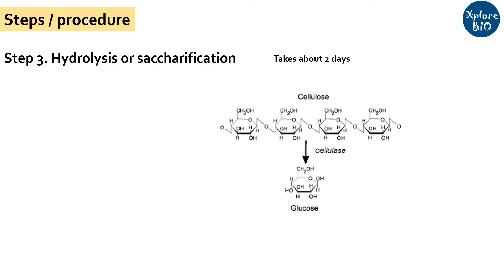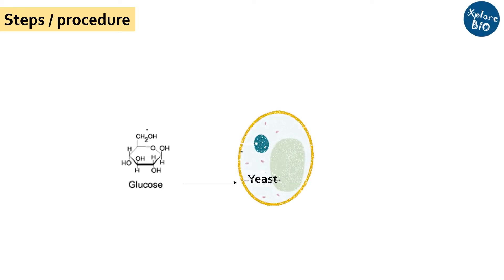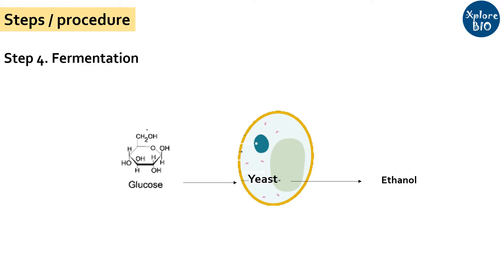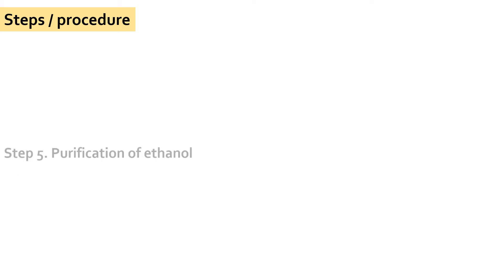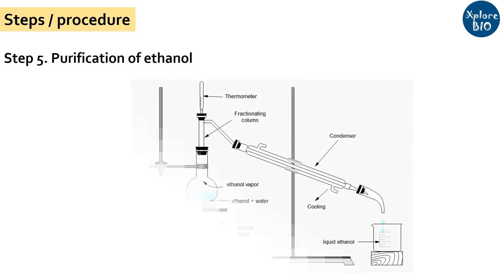This is followed by fermentation. Glucose produced in the above step is used by yeast like Saccharomyces cerevisiae to produce ethanol by fermentation, which occurs in the absence of oxygen. The final step is obtaining pure ethanol from the mixture, which is done by distillation.